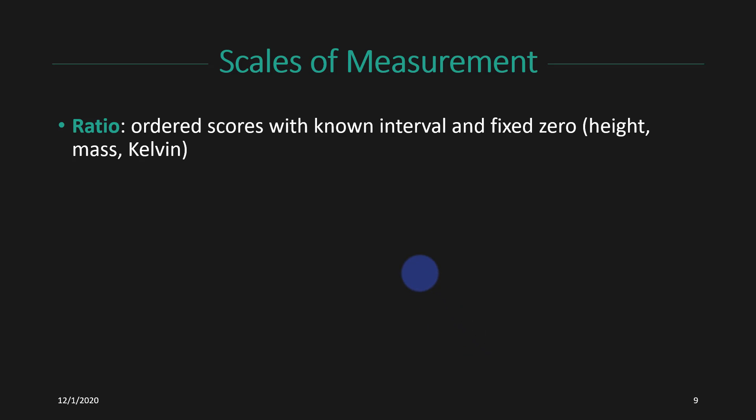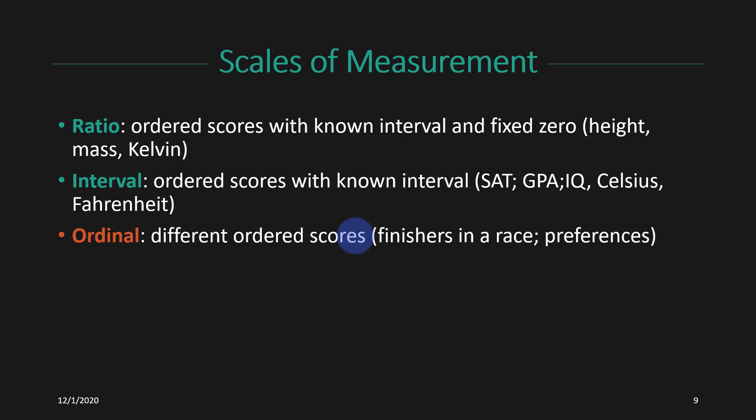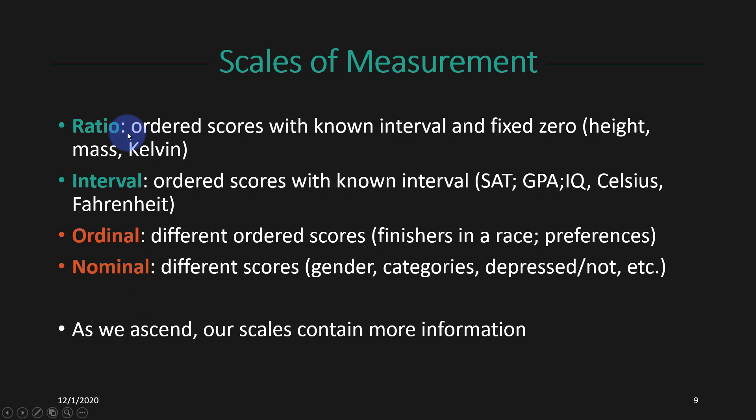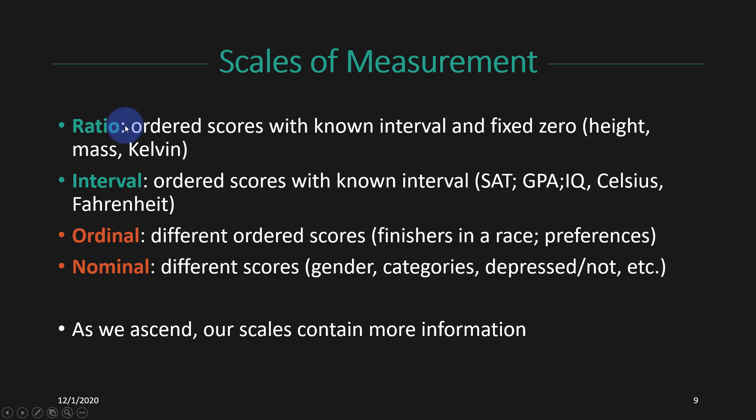What we can actually do in terms of different data visualizations depends a lot on the scales of measurement. We've talked about this in previous videos, but as a reminder, we have ratio data, we have interval data, we have ordinal data, and we have nominal data. In general, we can perform a lot more mathematical operations with interval and ratio data because the distance between units on those scales really means something. Whereas with ordinal and nominal data, we're a lot more limited in the types of mathematical operations that we can actually perform. So as we ascend this scale, we have more information contained at different scales of measurement. And that means that different analyses are going to be appropriate. And it also means that different types of data visualizations are going to be appropriate.